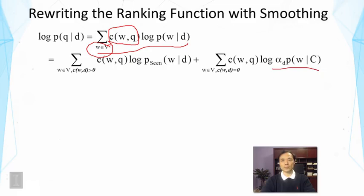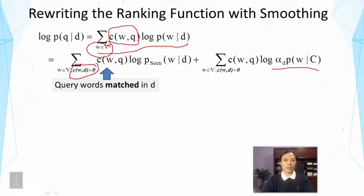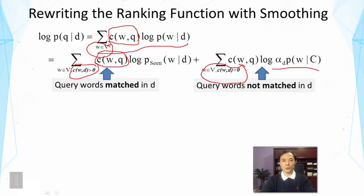One sum is over all the query words that are matched in the document — these words have a non-zero count in the document and also a non-zero count in the query. The other sum is over all query words that are not matched in the document — they occur in the query but don't occur in the document. In this second case, these words have the smoothed probability based on the collection language model, because of our smoothing assumption.